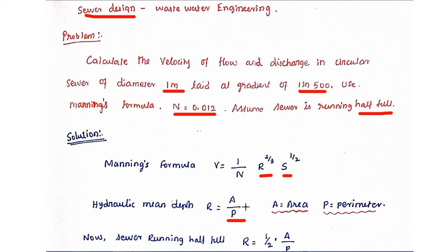Now the sewer is running half full, so we have to find out the half area, so into 1 by 2. We have to put 1 by 2 over here. So r equals half into a by p.